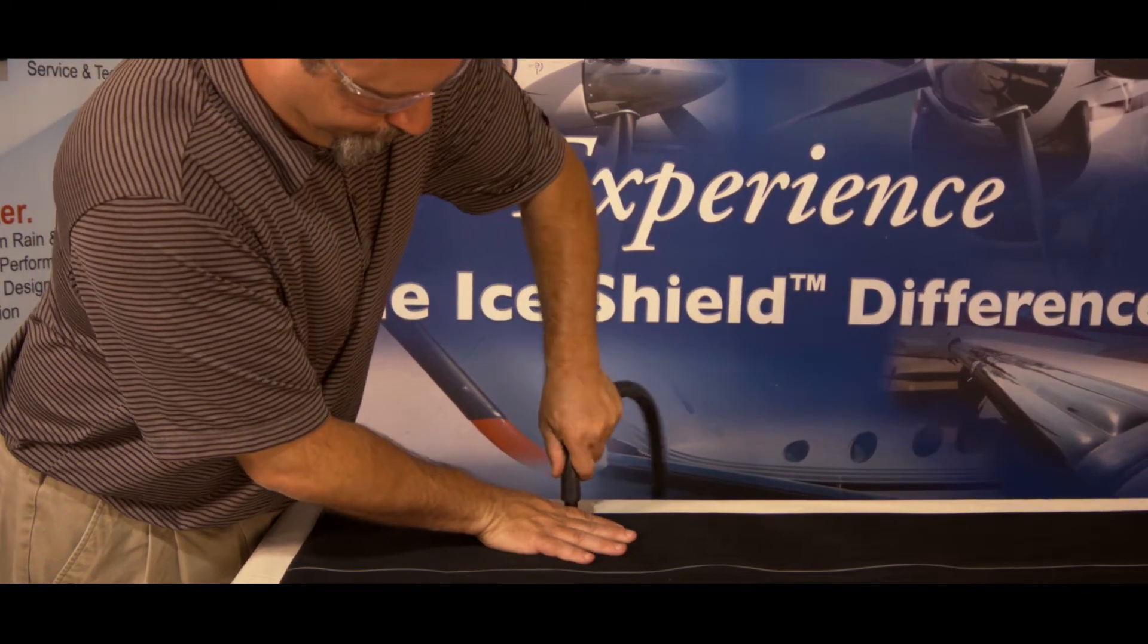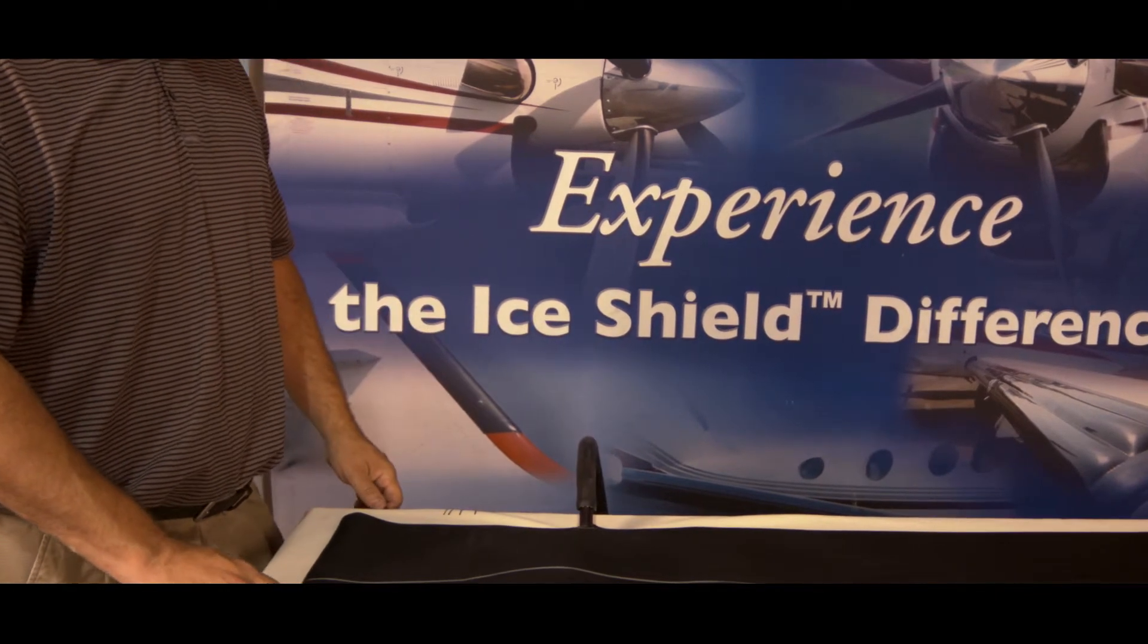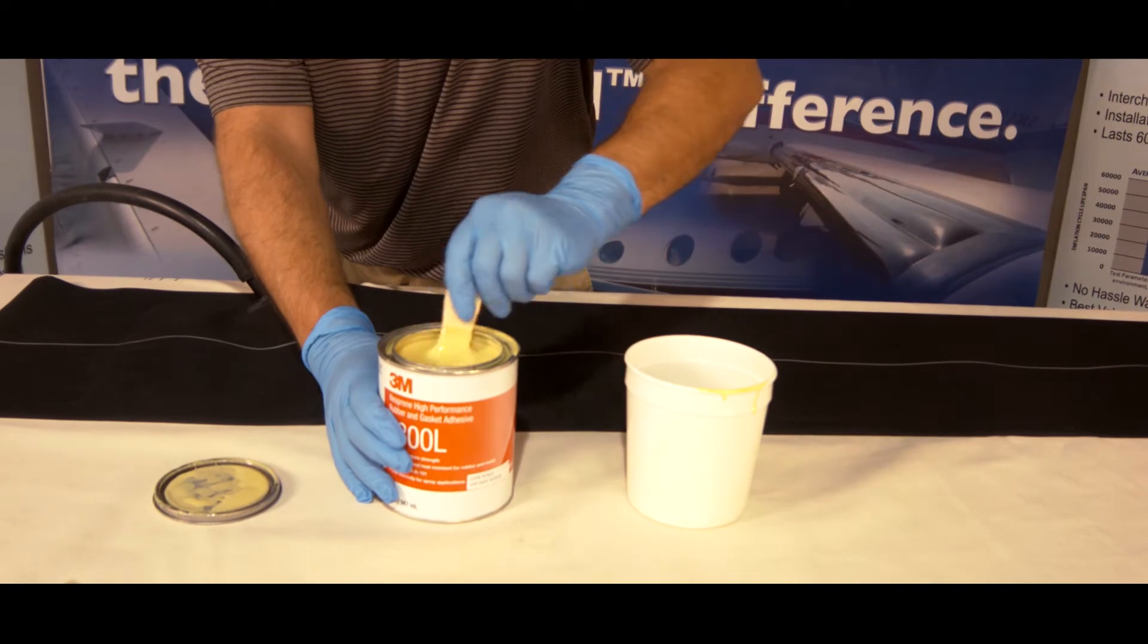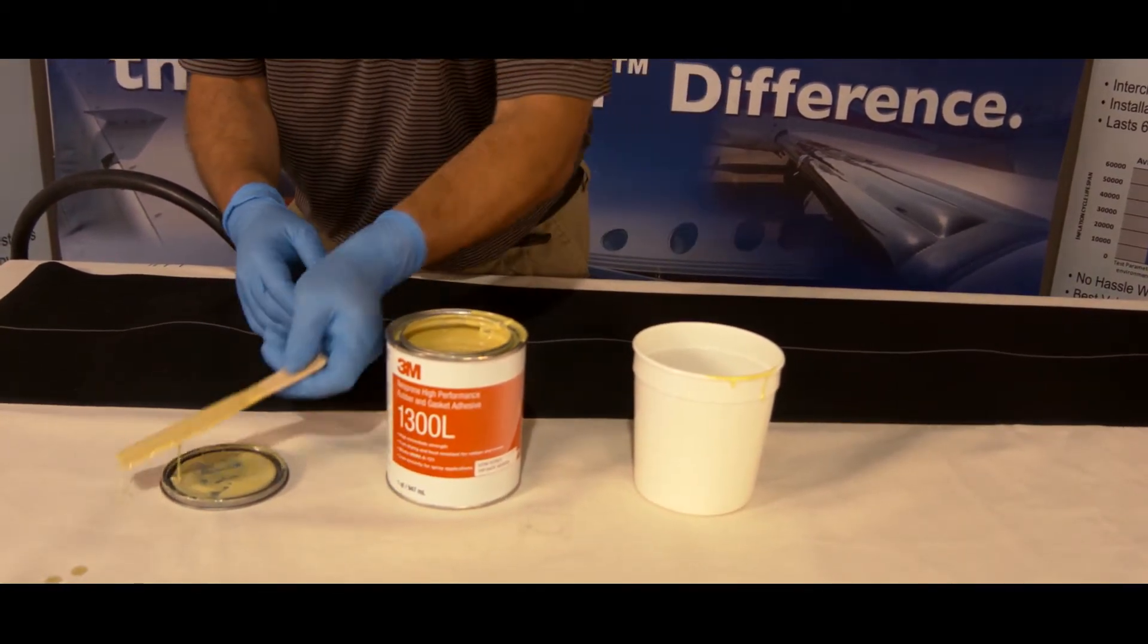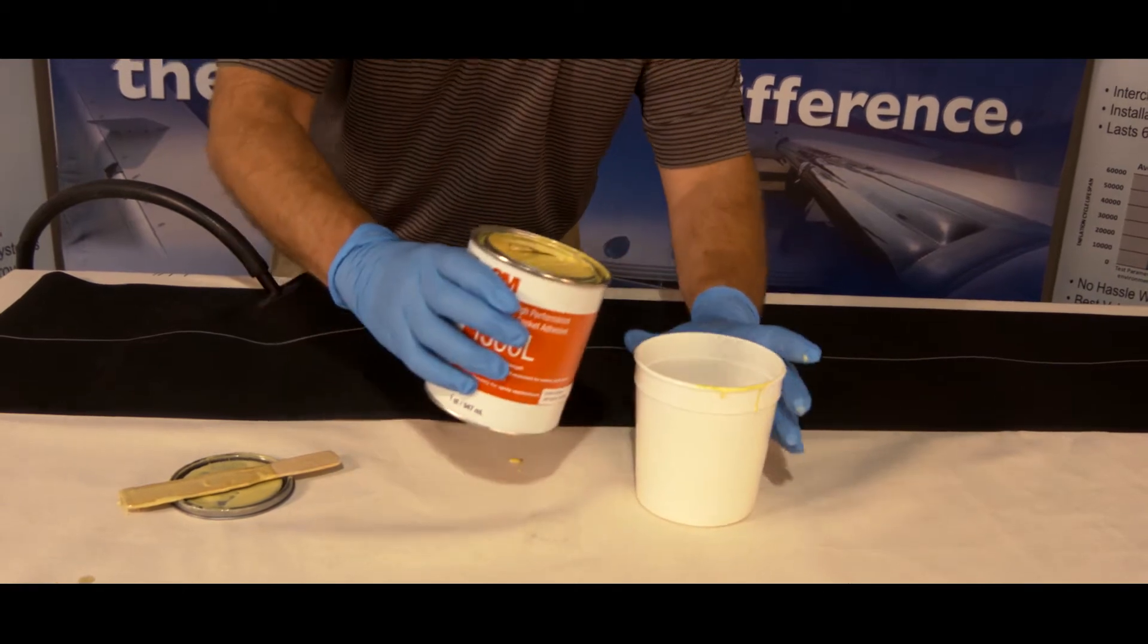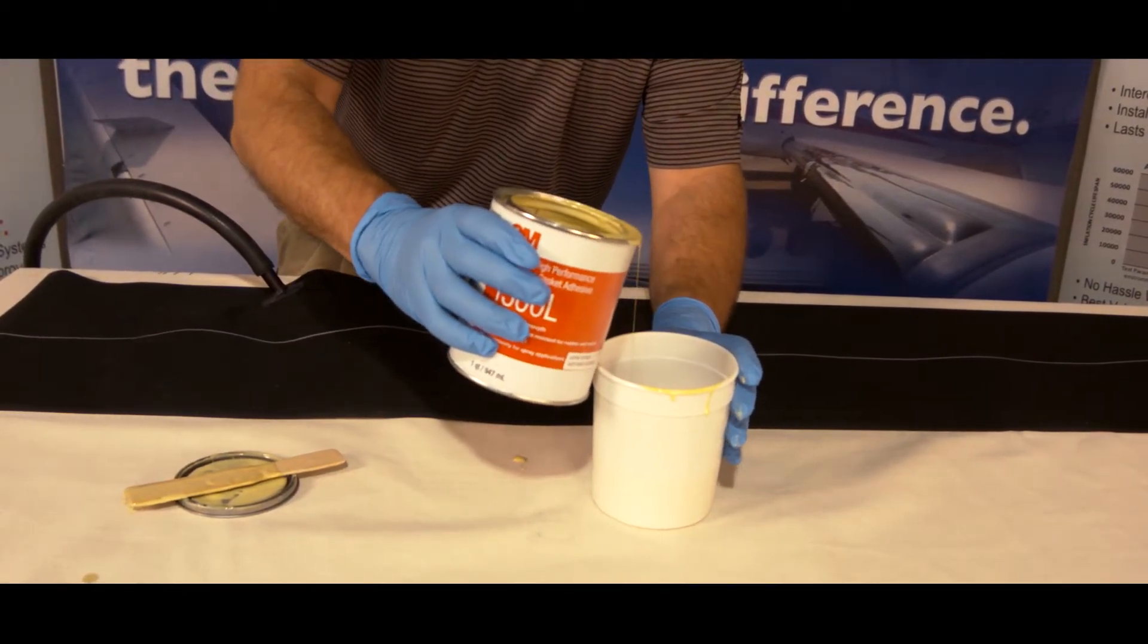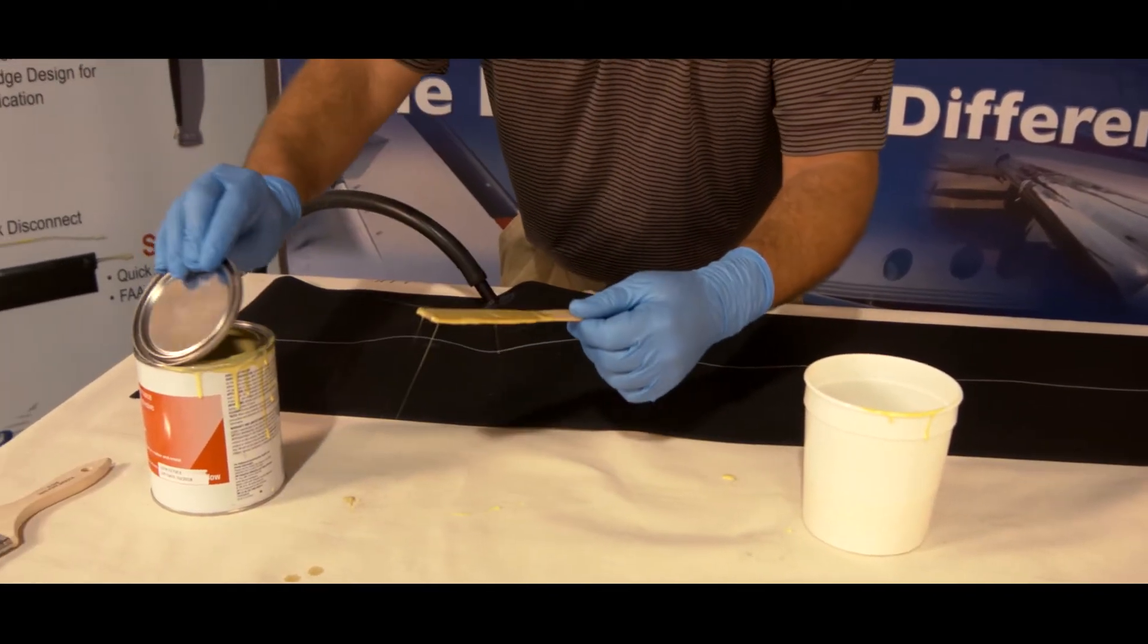Next, apply 7.5 PSI vacuum to the de-icer inlet, making sure that the 1300L adhesive is completely mixed with no clumps. Pour some 1300L into a clean, dry chemical container. Disposable paper paint containers work best. Cover and place the 1300L adhesive original container in a safe place for later use.